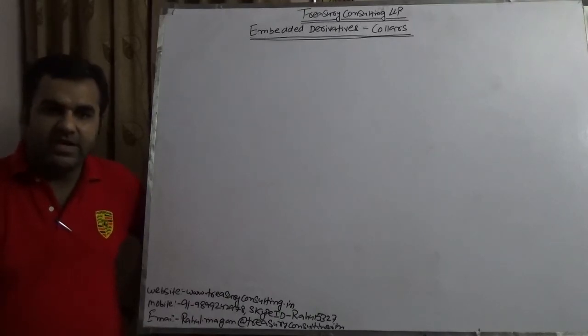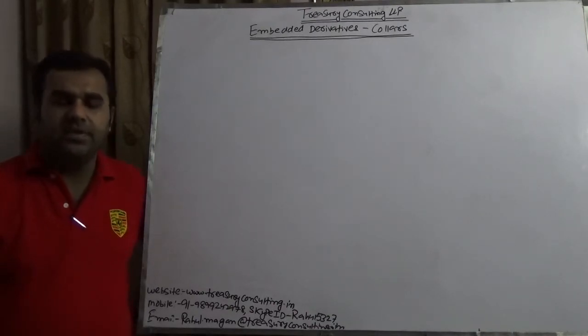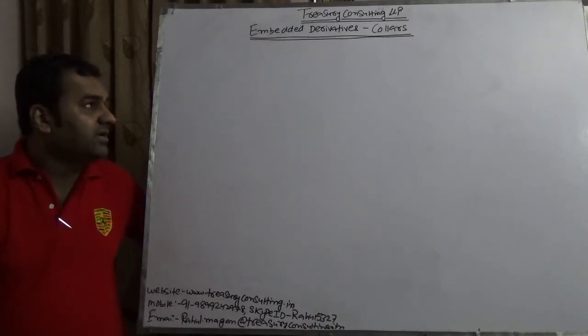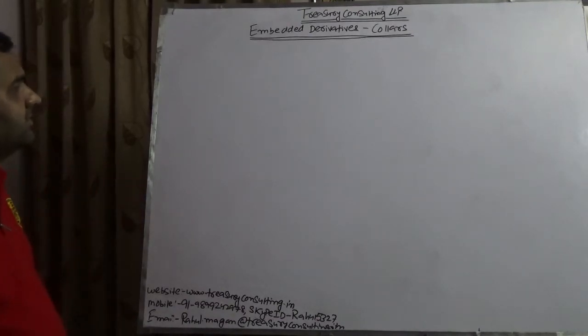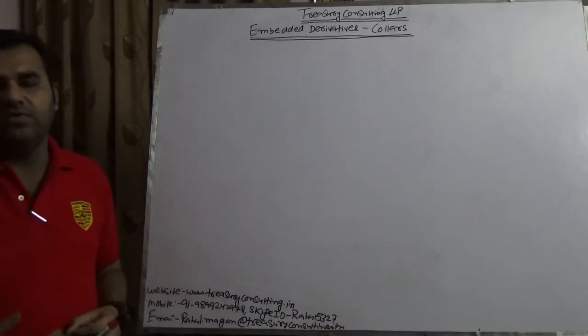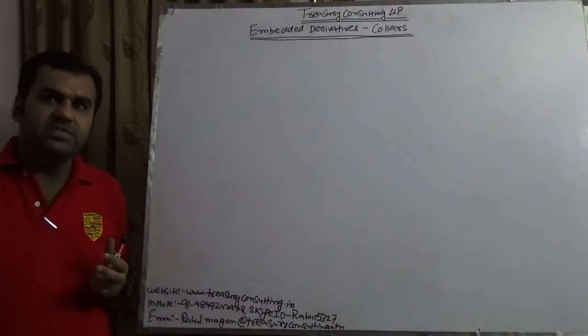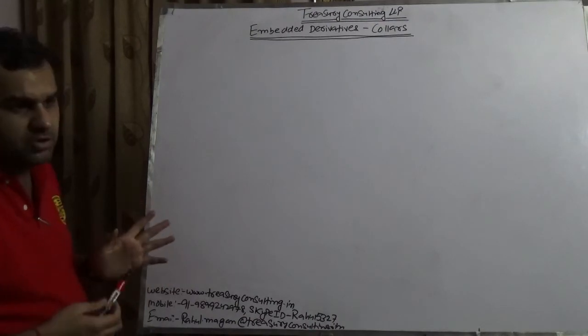I know that embedded derivatives are of variety of kinds and there are hundreds of embedded derivatives which we have. Generally Indian IT companies are majority a big user of embedded derivatives to be honest. But as per bookish language, derivatives can only be of two kinds - one is the put and one is the call. But we need to appreciate that there are variety of other kinds of embedded derivatives also. So here we are covering collars.